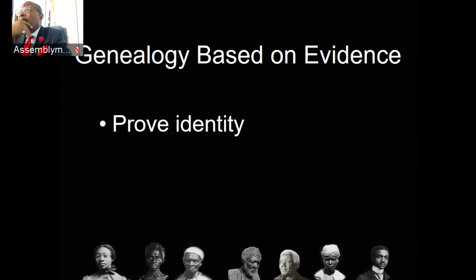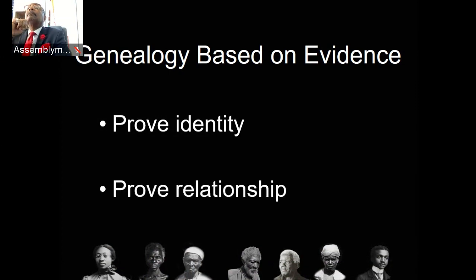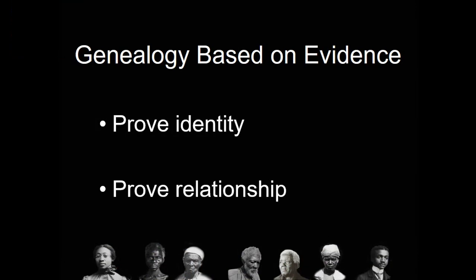Is this our ancestor, or is it merely someone with the same name? When you look in these databases they have thousands and thousands of names, and many people with the same name. The other thing we're trying to prove is relationship — is this your ancestor, is this the person's father, is this the person's mother, and do they have documentary evidence to prove that?